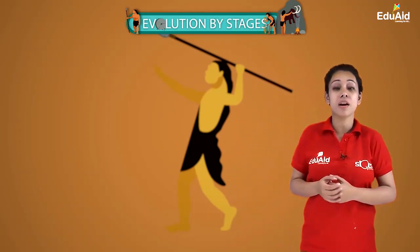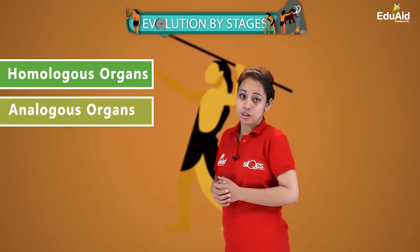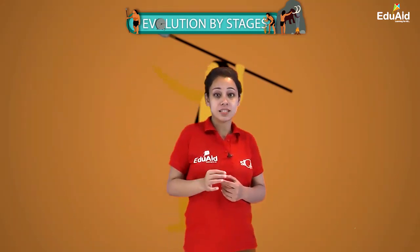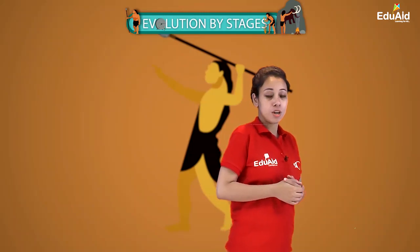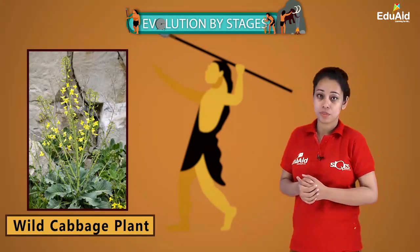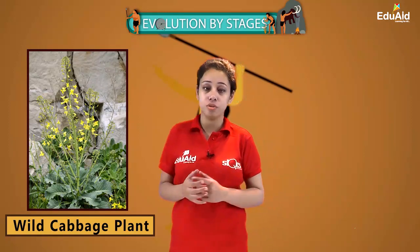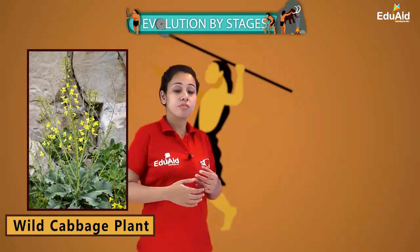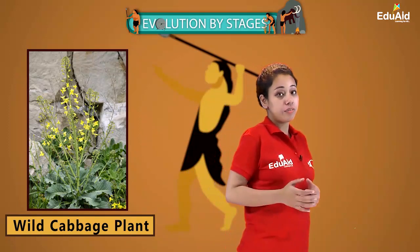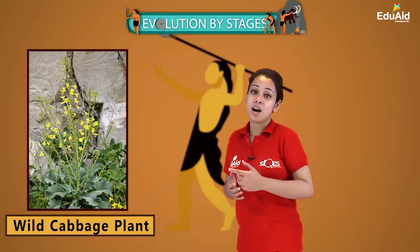In the previous session, we learned about homologous organs and analogous organs, which are evidence from the past. Now let us understand evolution through current evidence. We have all heard about the wild cabbage plant. This wild cabbage plant has been cultivated over thousands of years and it produces different vegetables. This is done by artificial selection and not natural selection.